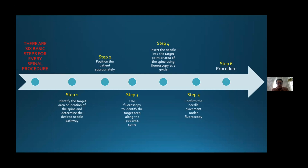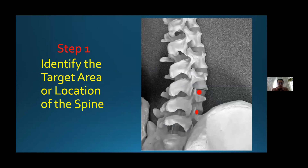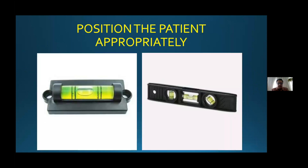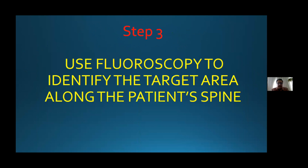We must know where we want to go. We will select the transforaminal approach, a UVA approach, inside-out technique, or we target the SAP for outside-in technique. Step two is the position of the patient. Patient position is very important, and this is the tool I use sometimes to be sure that my patient is in the correct vertical position during the operation.